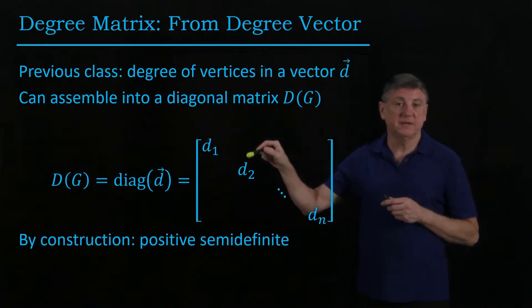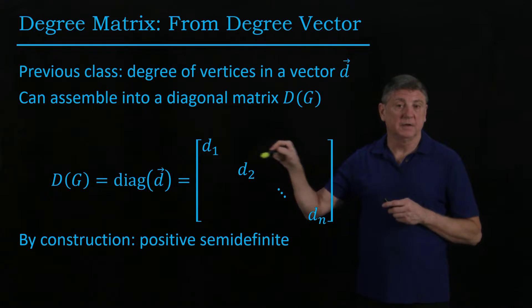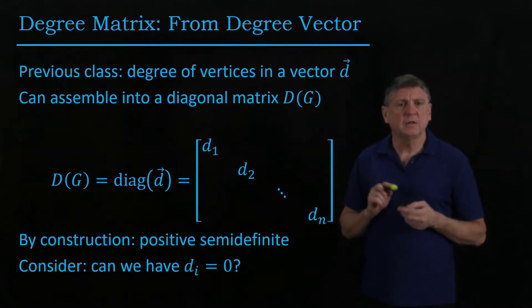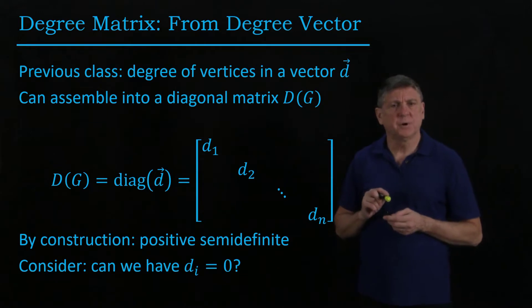Because each of these values has to be non-negative, it's positive semi-definite. I'll let you think for a moment about is it possible to have a vertex of degree zero.